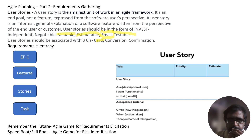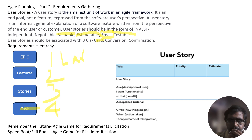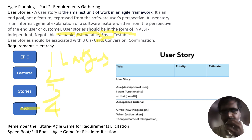Requirement hierarchy: the first layer is Epics, second is Features, third is Stories, and finally Tasks. Agile requirements follow a hierarchy based on the size of work required to build them. Common hierarchies: Epics at the top, then Features, then Stories, and Tasks. Large user stories are called Epics or Features, which are broken down into user stories. When a user story is picked up for development, it may be further broken down into tasks. All kinds of requirements — Epics, Features, and User Stories — follow the same user story format.